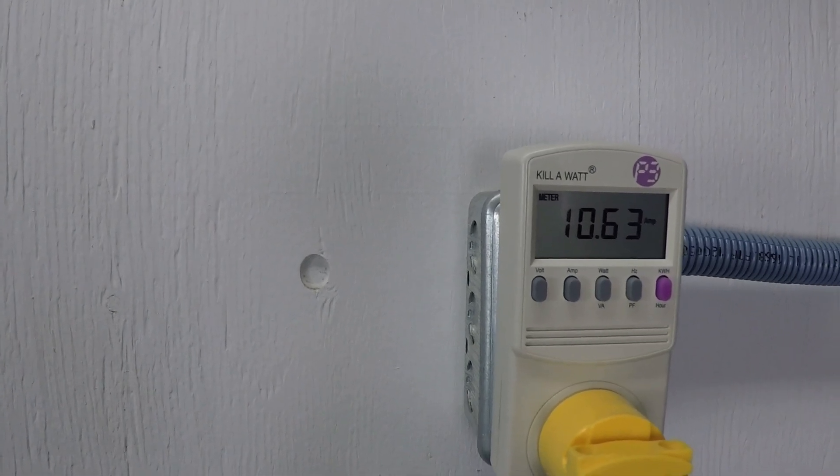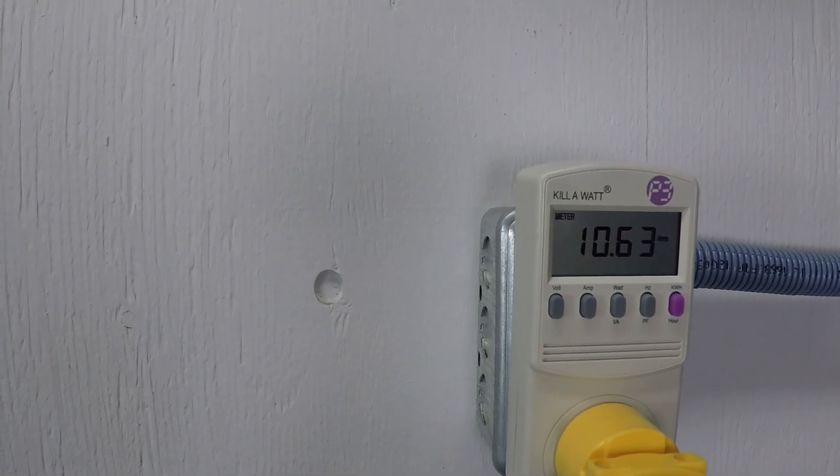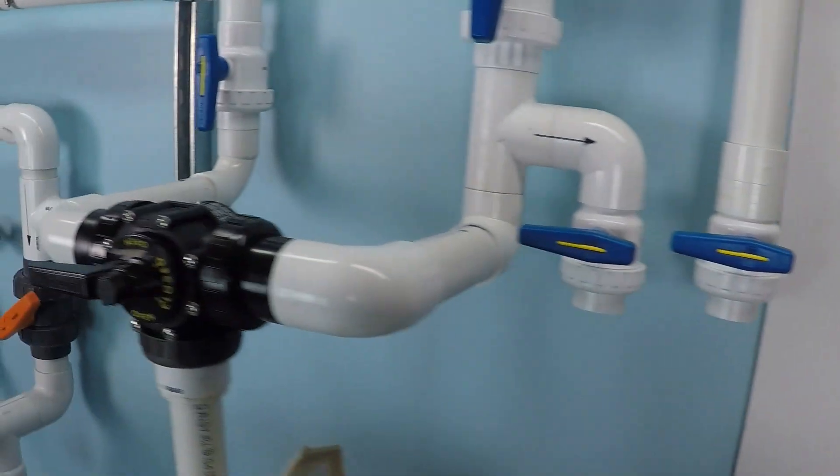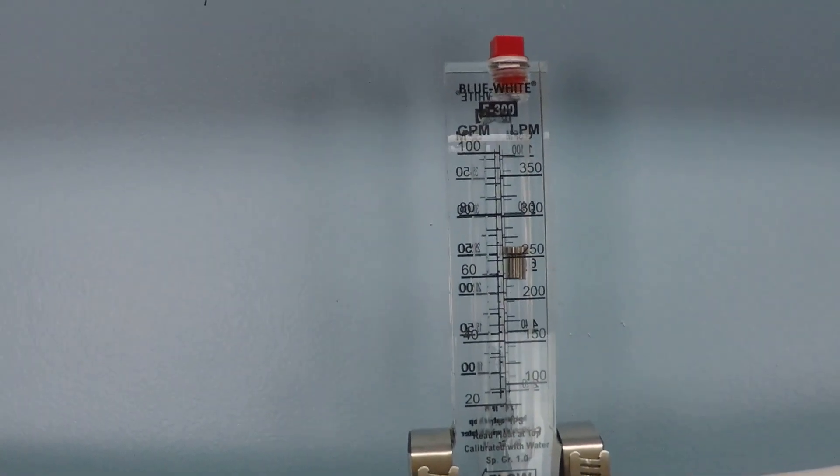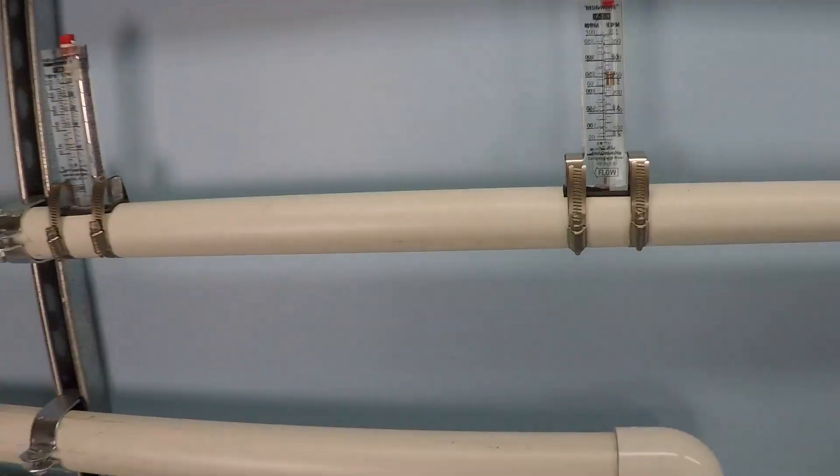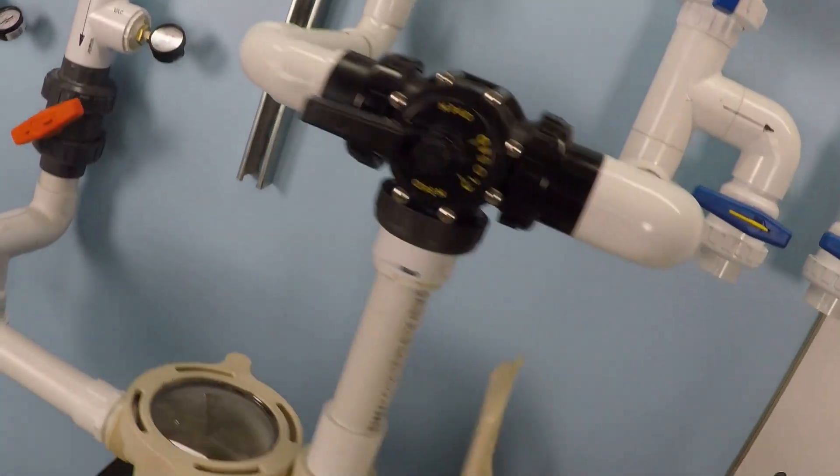It's right around 10.6 amps. A little bit of variance there, but 10.6 give or take. It's a very impressive flow rate. We're now up to 68, 69 gallons per minute, almost 70 gallons per minute. That's very good for inch and a half pipe.